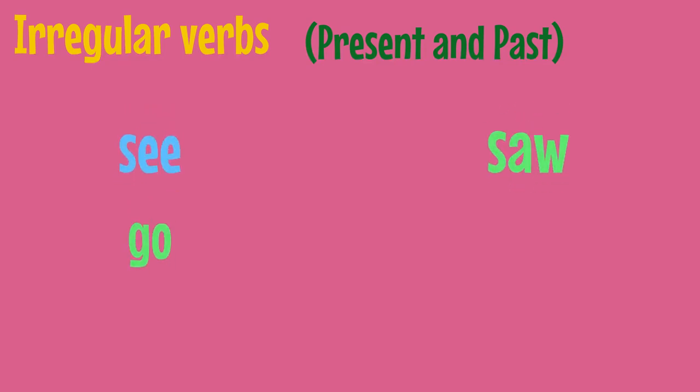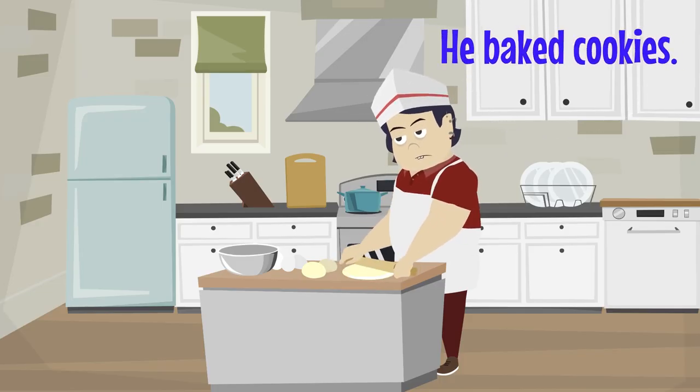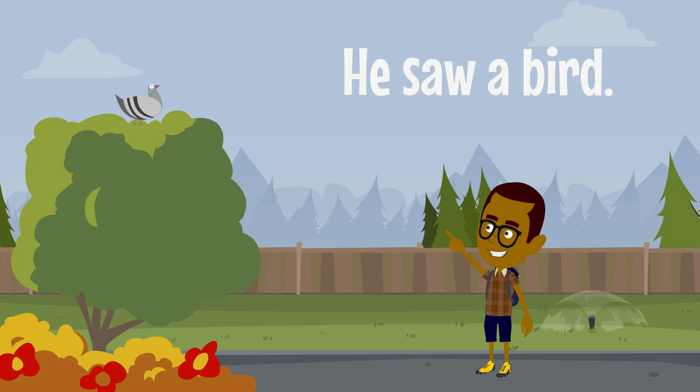Irregular verbs, present and past. See, saw. Go, went. He baked cookies. He saw a bird.